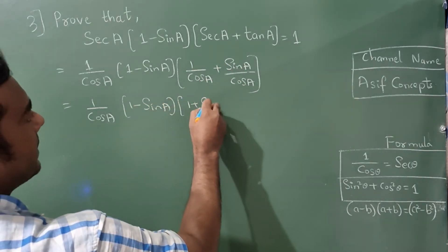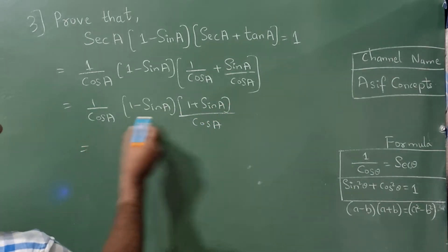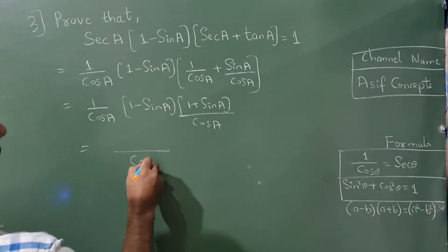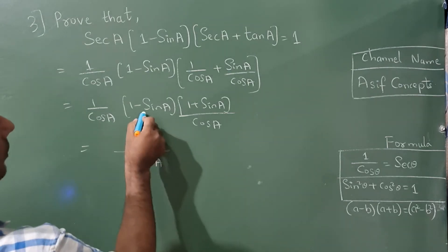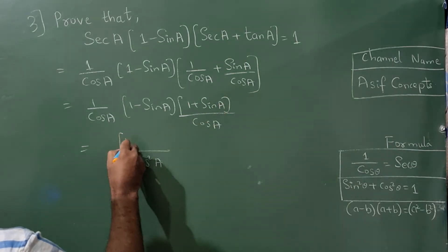...will be 1 plus sin A divided by cos A. Okay, cos A into cos A will become cos² A. Now this is (a - b)(a + b). You can see, according to the formula, it will become...